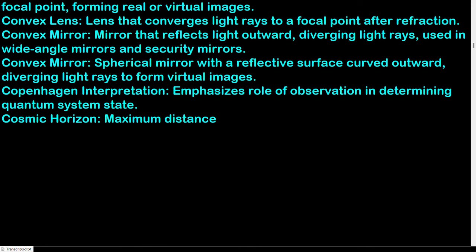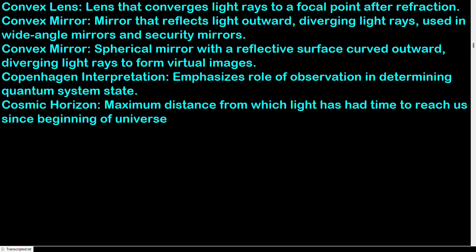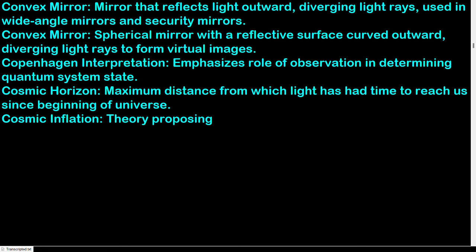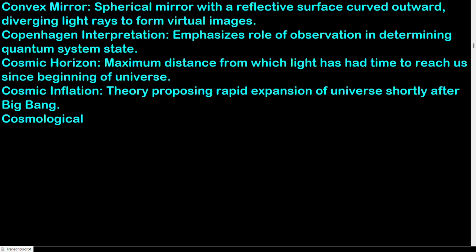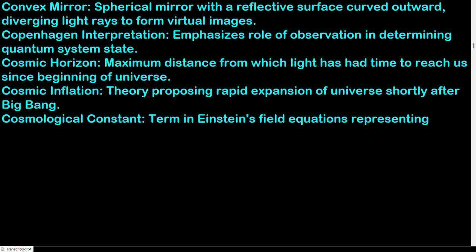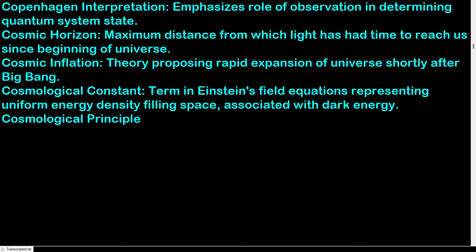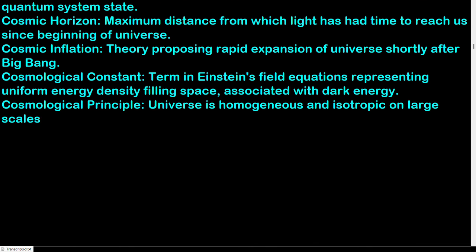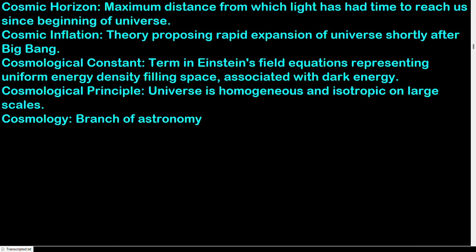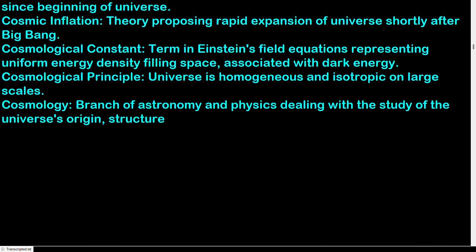Cosmic horizon: maximum distance from which light has had time to reach us since the beginning of the universe. Cosmic inflation: theory proposing rapid expansion of the universe shortly after the Big Bang. Cosmological constant: term in Einstein's field equations representing uniform energy density filling space, associated with dark energy. Cosmological principle: the universe is homogeneous and isotropic on large scales. Cosmology: branch of astronomy and physics dealing with the universe's origin, structure, and evolution.